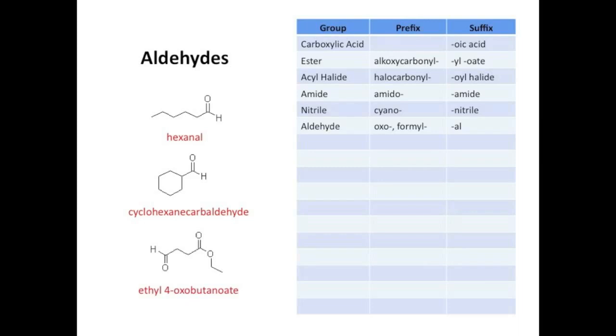Moving on to number 3, aldehydes take the prefix oxo- when attached to the main chain, but use the prefix formyl- when not. So given that it's attached to the main chain here, and the ester takes priority, example 3 is called ethyl-4-oxobutanoate. You do have to number the aldehyde when it is a substituent.